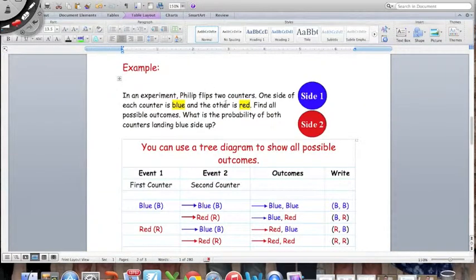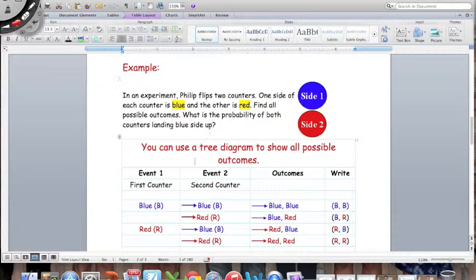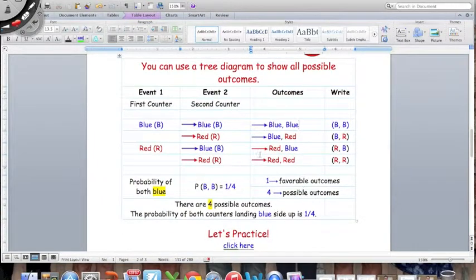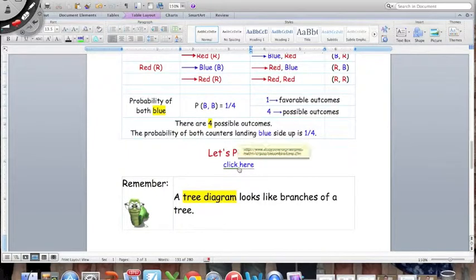Let's look at one more with the Foundational Principle. In an experiment Philip flips two counters. One side of each counter is blue and the other side is red. Find all the possible outcomes. What is the probability of both counters landing blue side up? Once again you can use a tree diagram to show all possible outcomes. In Event 1, the first counter, you can either get blue or red. In Event 2, the second counter, if you flip blue the first time you can get either blue this time or red this time. Same thing if you flipped red the first time, you can either get blue or red the second time. The four outcomes are here, and the probability of getting blue both times is one in four. This is our sample space.